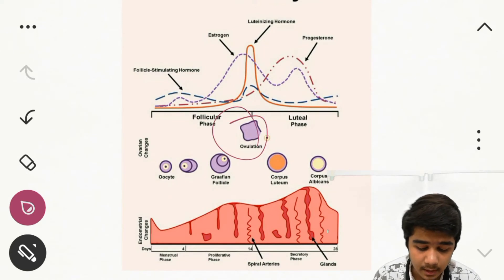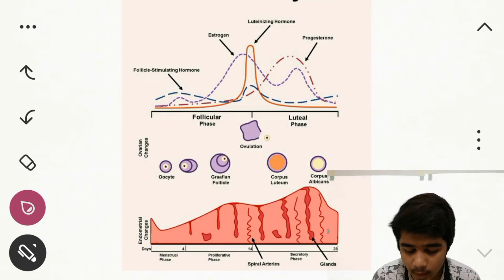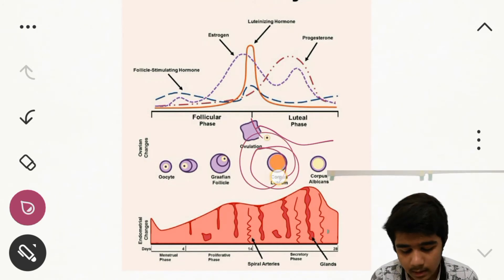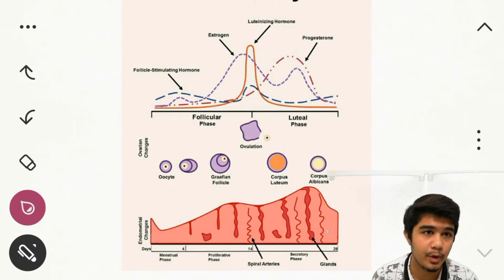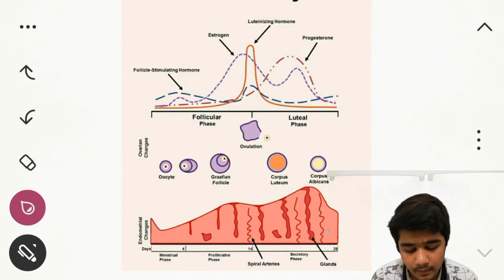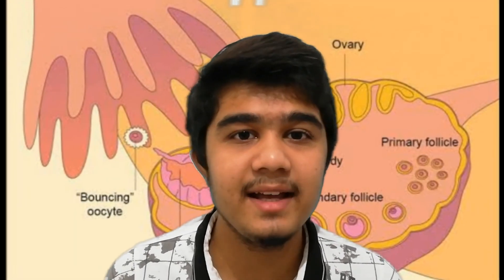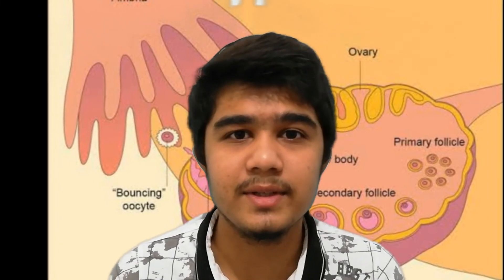After ovulation, the egg goes to the fallopian tube. What happens to the follicle? Blood enters the Graafian follicle, clots, and forms a yellow-colored structure called the corpus luteum. The corpus luteum secretes progesterone, and you can clearly see the progesterone curve rise significantly. If the egg gets fertilized, the corpus luteum remains; if not, the corpus luteum degenerates after a few days. That completes the ovarian cycle.